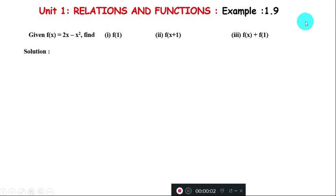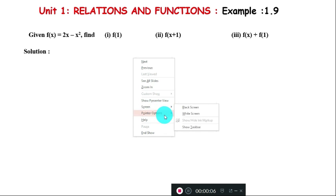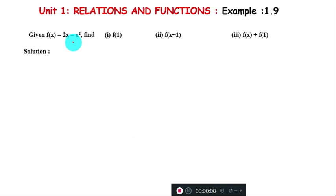Example 1.9: Given f(x) = 2x - x², find (i) f(1), (ii) f(x+1), and (iii) f(x) + f(1). The solution to these problems follows.